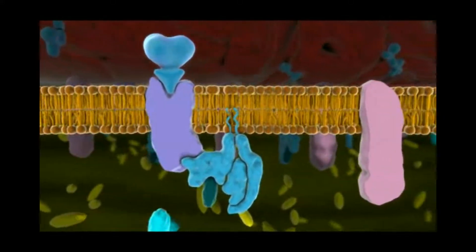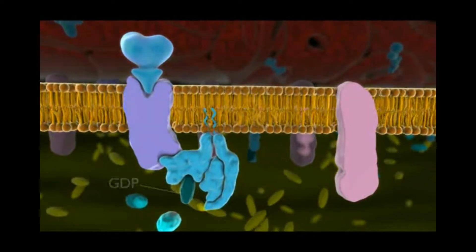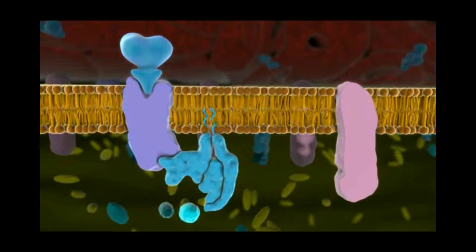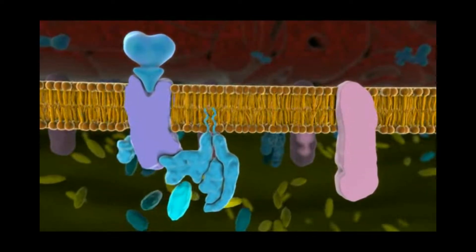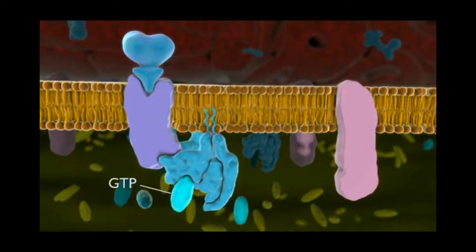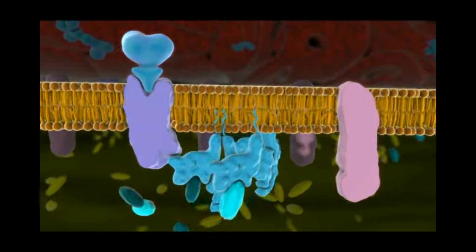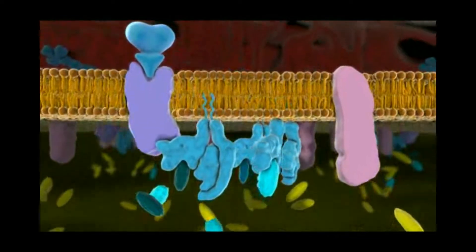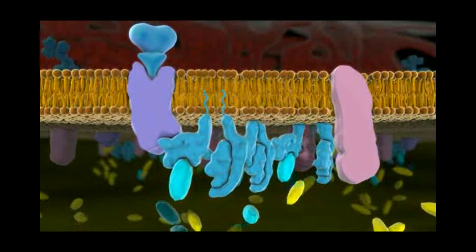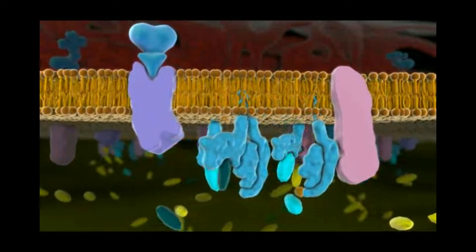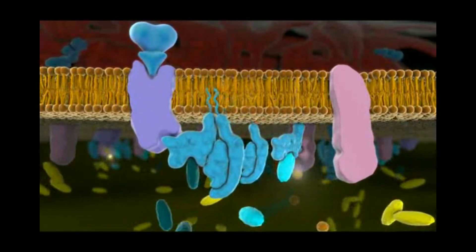The activation process begins with the release of a GDP molecule from the G protein, in exchange for a GTP molecule. This causes the G protein to change shape and become active. The hormone-bound receptor activates many individual G proteins, which greatly amplifies the signal from a single hormone molecule.